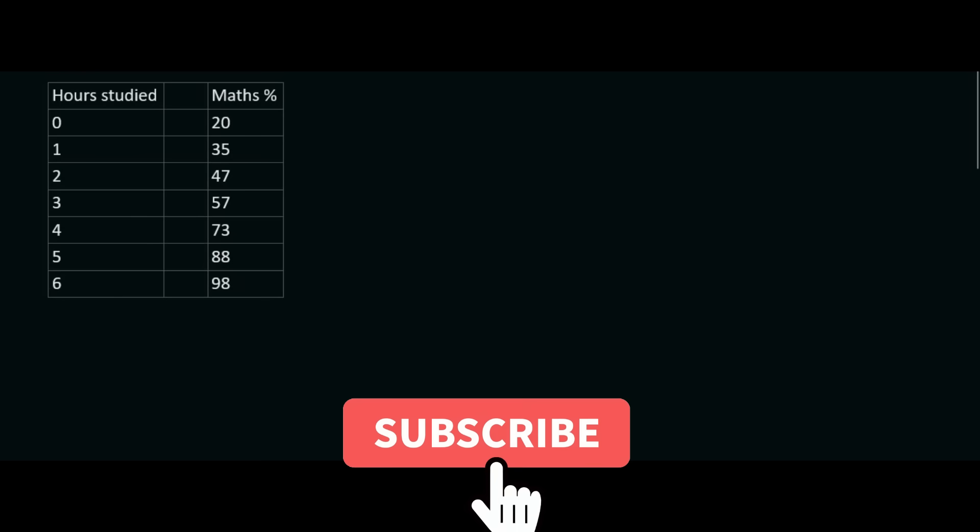Let's say we did a study where we wanted to examine how people's math marks at the end of the year would be affected by the number of hours that they studied per day. These hours over here are hours studied per day. What it tells us is that if you study zero hours per day, you would get 20% for your math mark, and then one hour per day you'd get 35%, and so on.